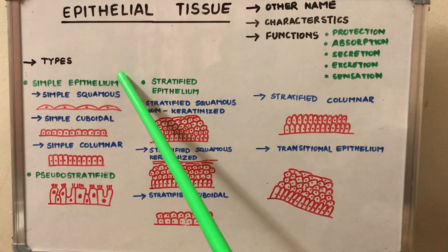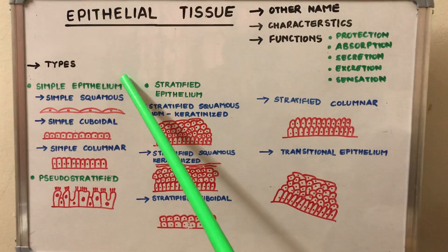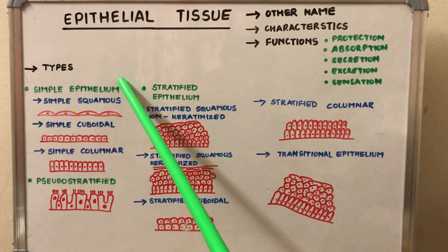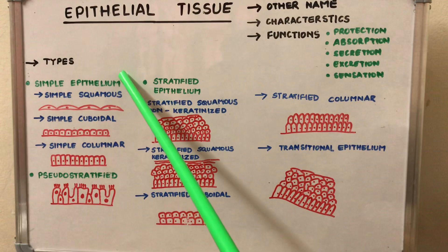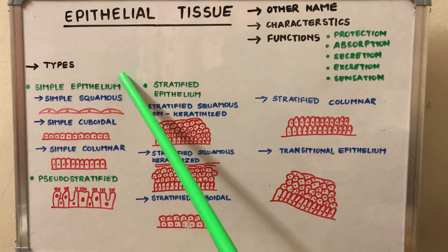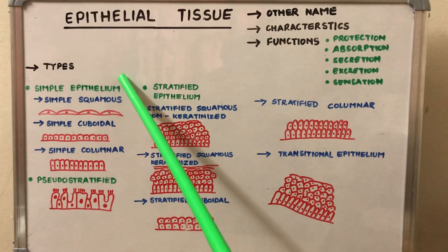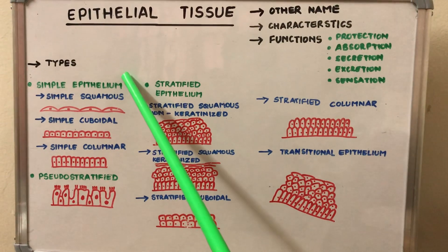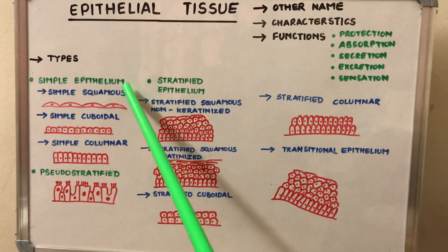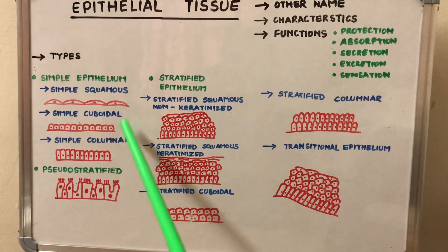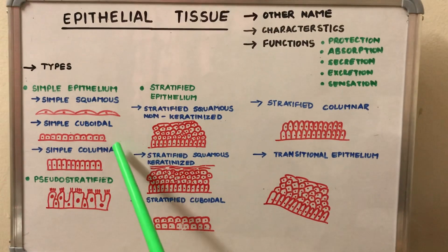The simple epithelium is made up of a single layer and is present on absorptive and secretory surfaces of the body and at sites of exchange of substances not subjected to stress. It is of three basic types: simple squamous, simple cuboidal, and simple columnar.